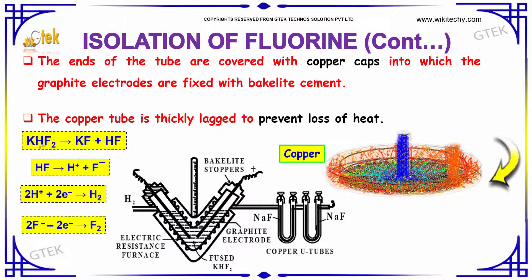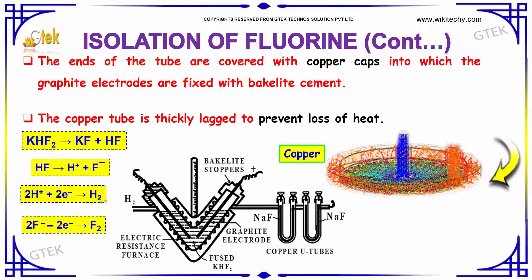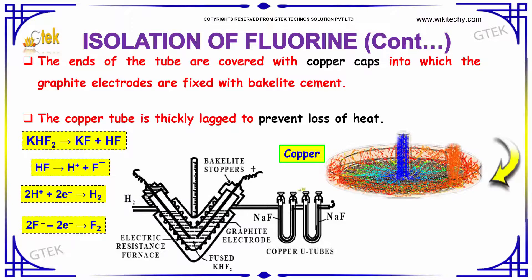KHF2 (fused) gives KF and HF. HF dissociates into H⁺ and F⁻. At the cathode, 2H⁺ + 2e⁻ gives hydrogen gas, and at the anode, 2F⁻ − 2e⁻ gives fluorine gas (F2). This is how fluorine is formed.